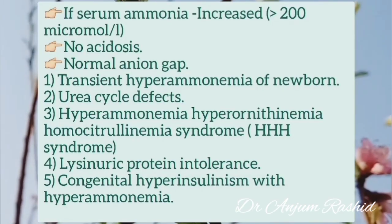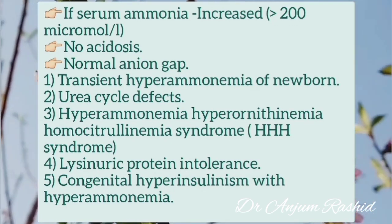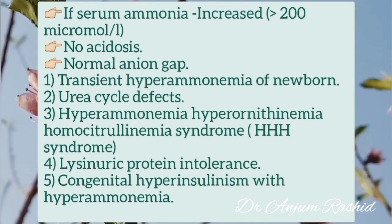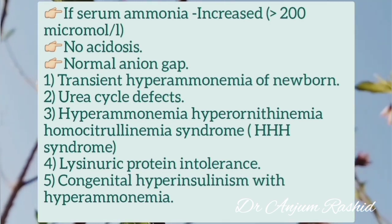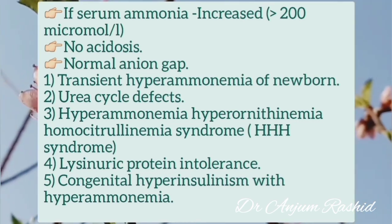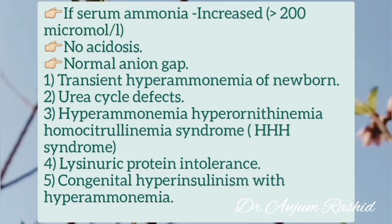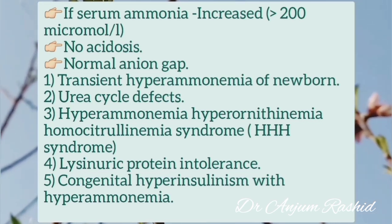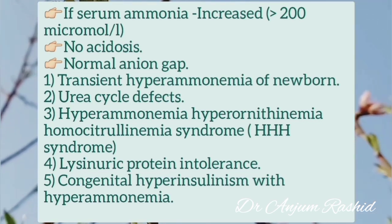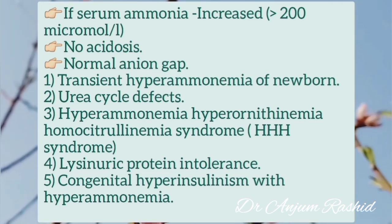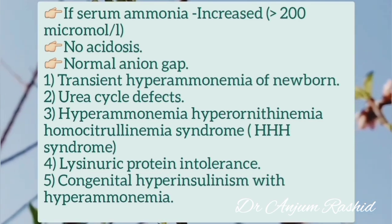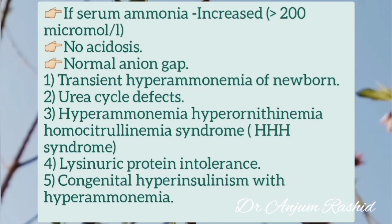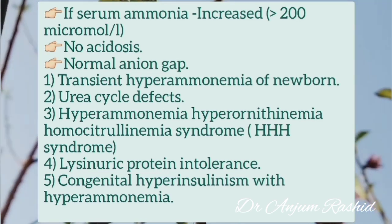If the serum ammonia is increased — that is, more than 200 micromoles per liter — there is no acidosis, and the anion gap is normal, then consider the following five differential diagnoses. Number one, transient hyperammonemia of the newborn. Number two, urea cycle defects. Number three, hyperammonemia-hyperornithinemia-homocitrullinemia (HHH) syndrome. Number four, lysinuric protein intolerance. And number five, congenital hyperinsulinism with hyperammonemia.